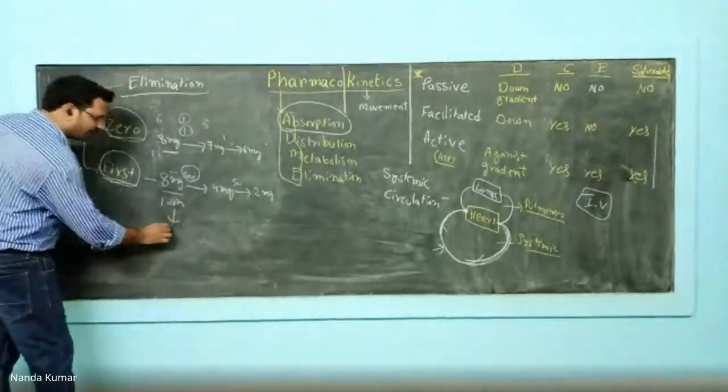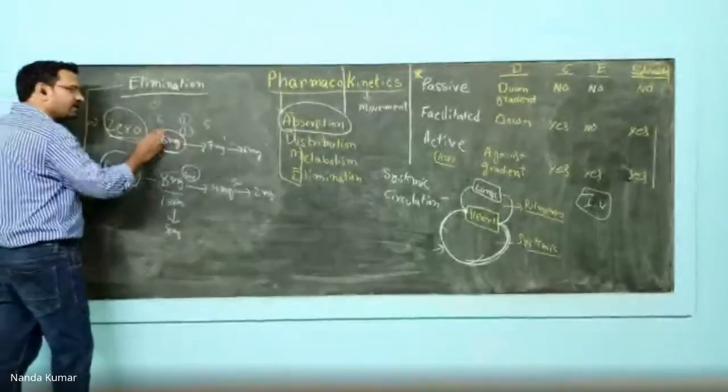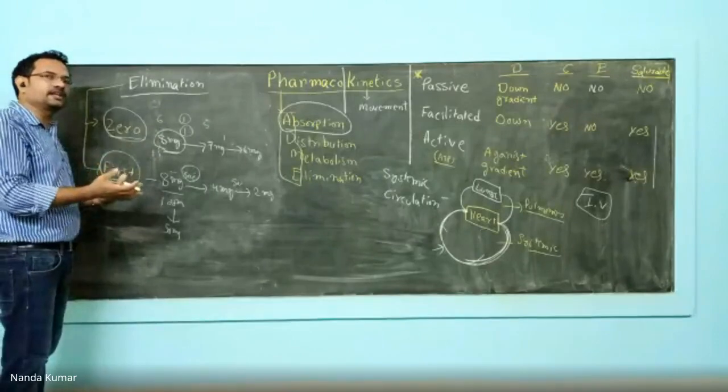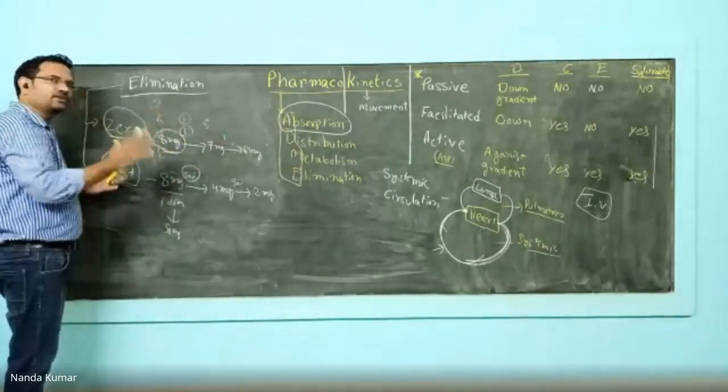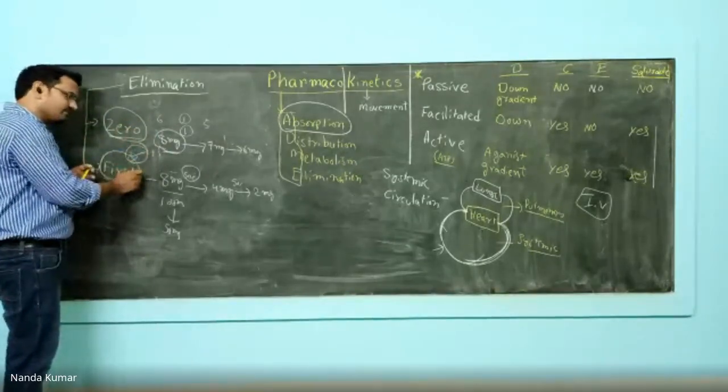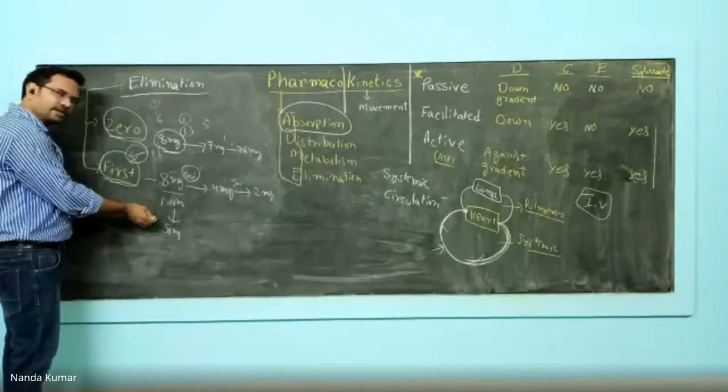When a drug is eliminated by first-order kinetics, constant fraction is getting eliminated, so initial concentration will determine how much amount is getting eliminated. If you have 100 mg here, at first time 50 mg will get eliminated because of the constant fraction.